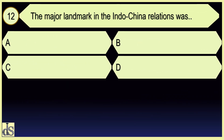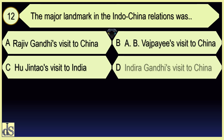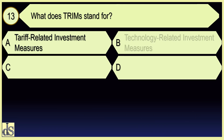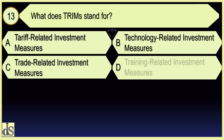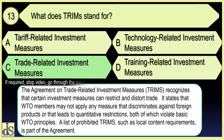The major landmark in the Indochina relations was R-17, Rajiv Gandhi's visit. What does TRIMS stand for? Trade Related Investment Measures.